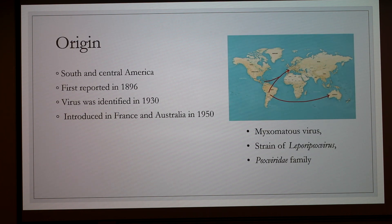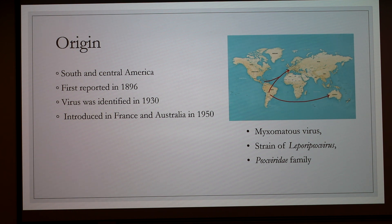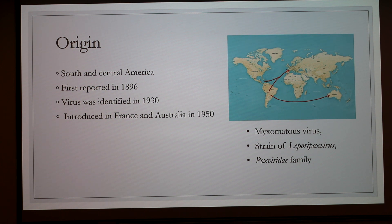Myxomatosis is a disease from South and Central America, first reported in 1896 when an Italian laboratory rabbit colony imported into Uruguay for research suddenly died of an extremely infectious disease. The virus was identified in 1930 and was introduced in France and in Australia in 1950 to control rabbit population. This disease is caused by myxoma virus, a strain of Leporipoxvirus from the Poxviridae family. There are almost three days between the infection and the appearance of the first symptoms.